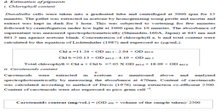Carotenoid contents are extracted in acetone as mentioned above and analyzed spectrophotometrically by measuring absorbance at 470 nanometers. The carotenoid content is calculated according to the method of Davis (1976) using an extinction coefficient of 2500. Carotenoid content is expressed as picograms per cell.